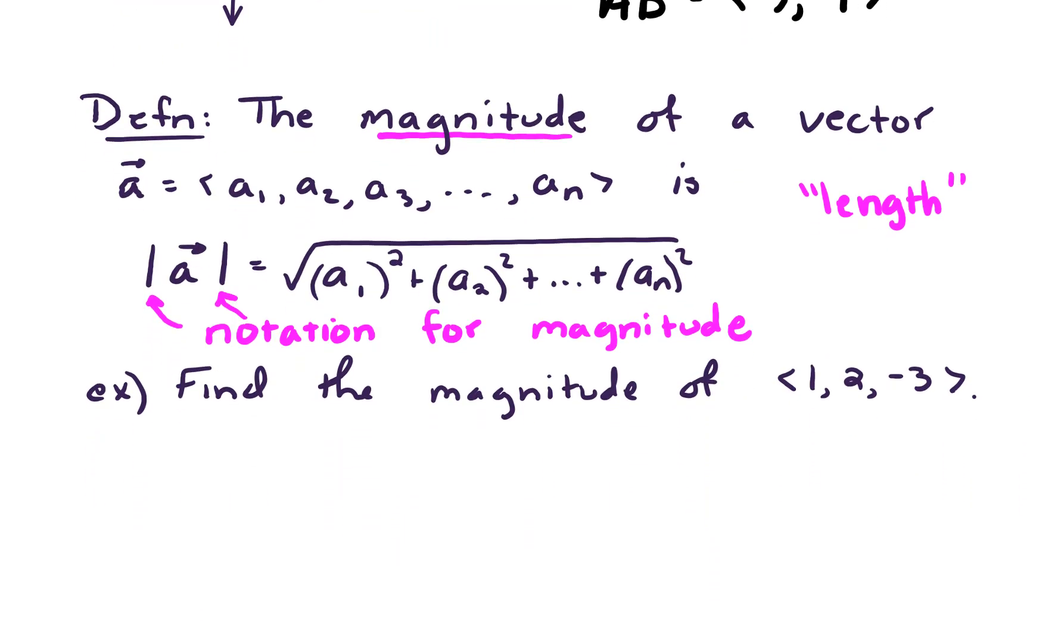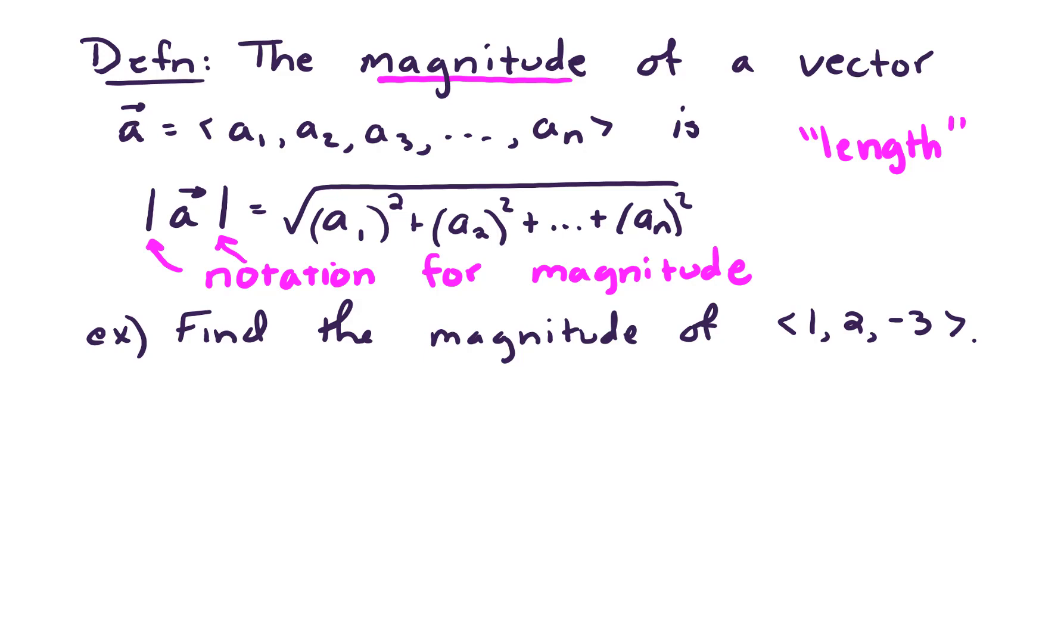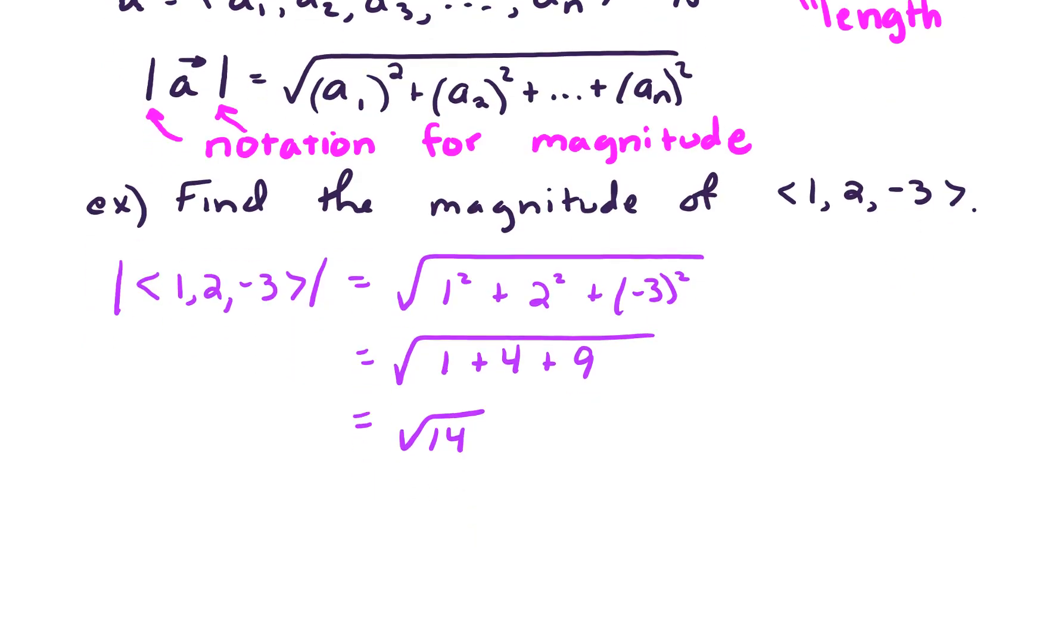So let's do an example. Let's find the magnitude of the vector 1, 2, negative 3. So I want to find the magnitude. I'll use the vertical bars. Find the magnitude of the vector 1, 2, negative 3. And that is equal to the square root of 1 squared plus 2 squared plus a negative 3 squared. And working that out, we get 1 plus 4 plus 9, which is the square root of 14. And we cannot simplify that any further. So we say the magnitude is root 14, or the square root of 14.